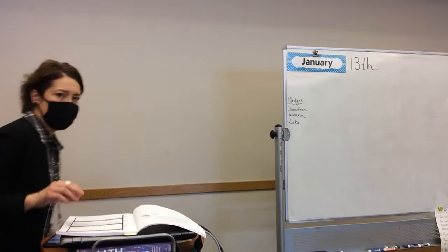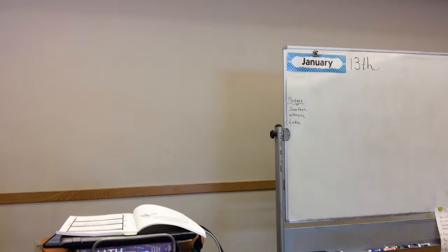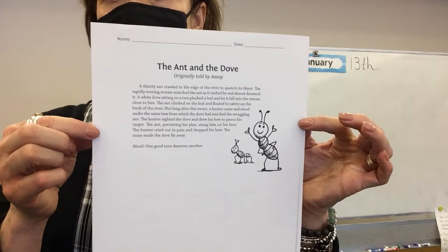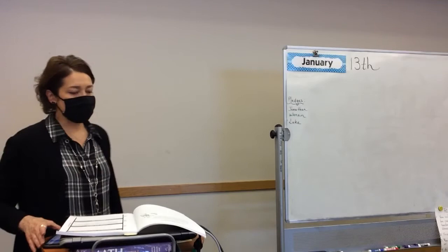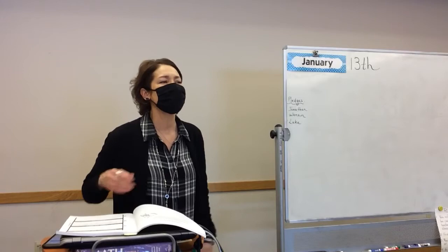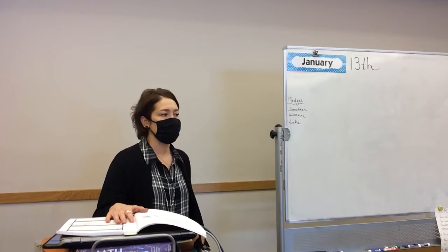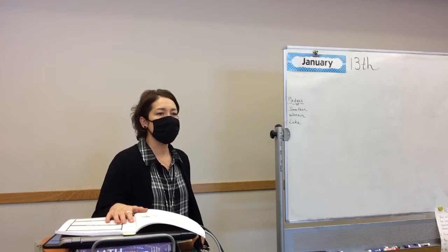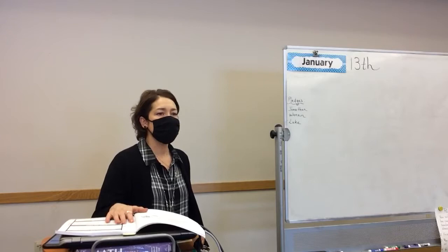We are working on the little sheet that says 'The Ant and the Dove.' It's a little story — a fable. A fable is a short story that has a lesson to it, something to learn, a teachable story. Usually short, there is a series of things that happen. So we are going to read 'The Ant and the Dove,' and you need to pay attention to what happens in the story.